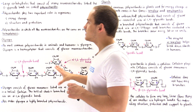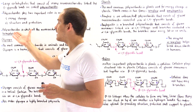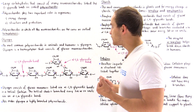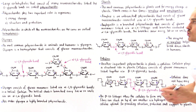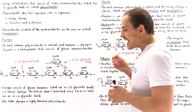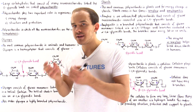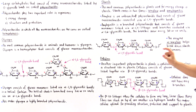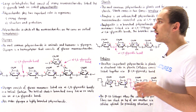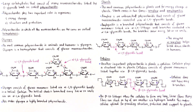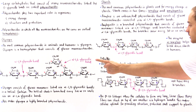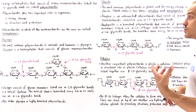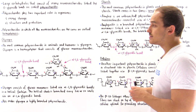So glycogen is the polysaccharide used to store energy in animals, while starch is the polysaccharide used to store energy in plants. Now let's move on to cellulose. Cellulose is actually one of the most common types of organic compounds on Earth, and it is another very common polysaccharide found in plants. Unlike starch and glycogen, cellulose plays a role in structure, and we'll see why — it has to do with the type of bonds that exist in cellulose.